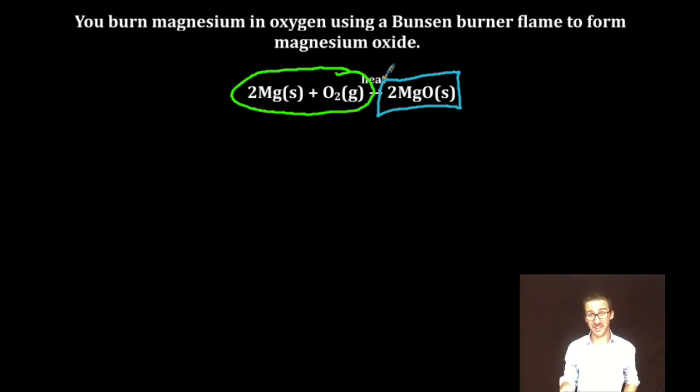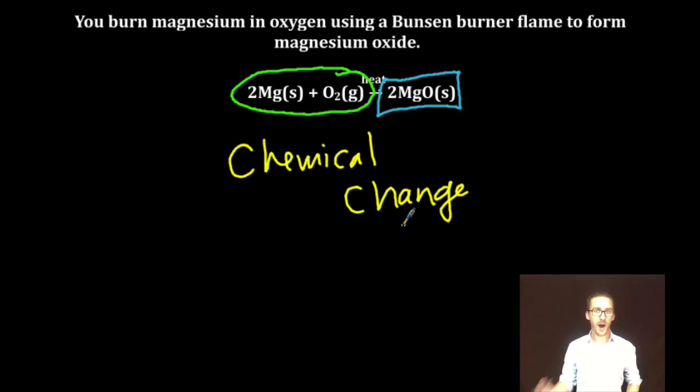Has the identity of my reactants changed or stayed the same? If you guessed chemical change, you would be correct. Why? The identity of my reactants have changed. On the reactant side, I've got magnesium as an element, oxygen as an element. But on my product side, magnesium and oxygen have formed a compound. A new bond has been formed.